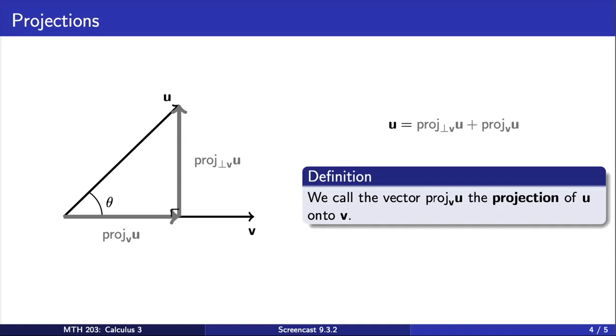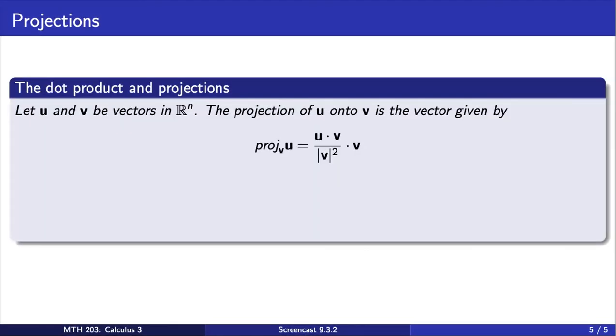In particular, the vector that is parallel to v is called the projection of u onto v. Using properties of the dot product, we can deduce the following formula for the projection of u onto v. Note that the first term here is a real number.